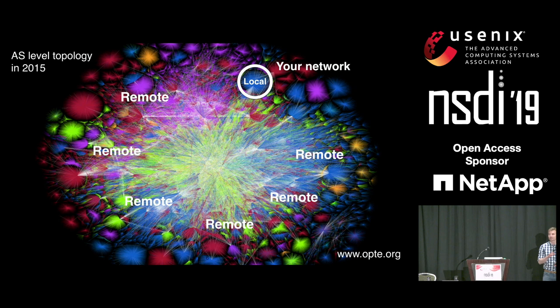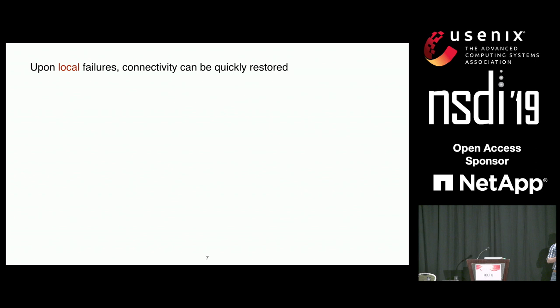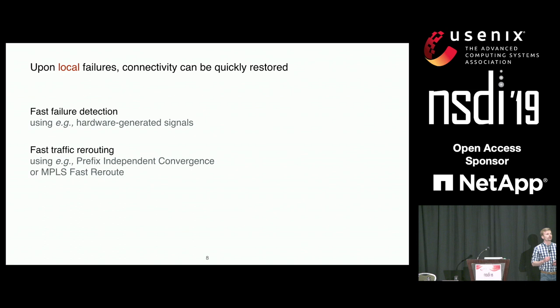The good news is that for local failures, many techniques have been designed already, and they enable quick traffic restoration when there is a failure. They rely on two key ingredients: they can quickly detect failures using hardware-generated signals, and then they can quickly reroute traffic using prefix-independent convergence or MPLS fast reroute.